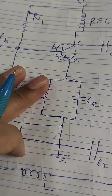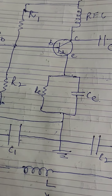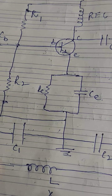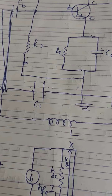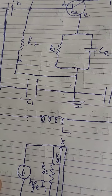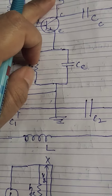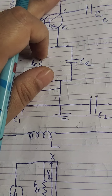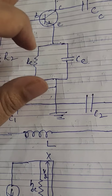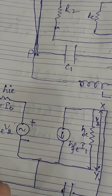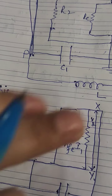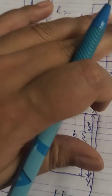So we get a continuous and undamped output from the circuit. When doing analysis, we will use an AC equivalent circuit for the Colpitts oscillator using a common emitter hybrid model. The reactance of the RFC is greater than L, so we omit that part in the equivalent circuit.